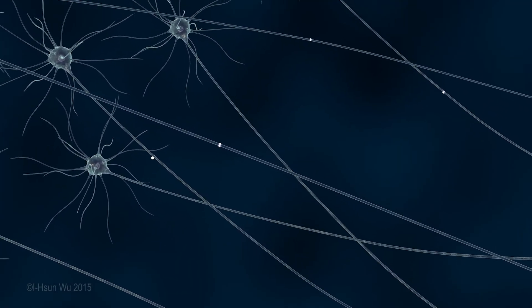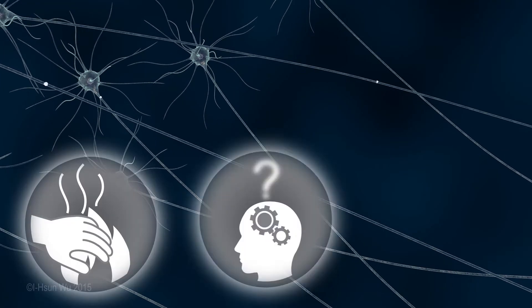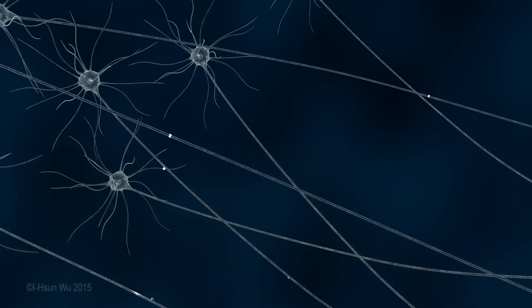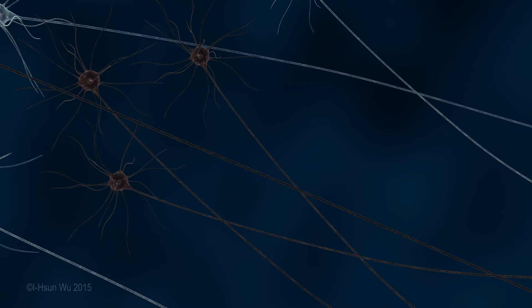These changes may lead to problems with feeling, thinking, and moving. If demyelination persists, it could lead to irreversible damage to neurons and loss of neurological function. Transplantation of glial restricted progenitors has the potential to prevent this.